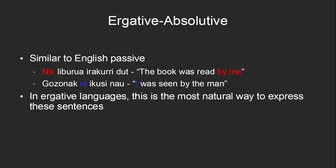Ergative-absolutive alignment is somewhat similar to the passive voice in a nominative-accusative language like English. For example, the previous two sentences could be translated in a passive-like construction. But in an ergative language, this would be the most natural way to express these ideas, unlike English where it is an unusual construction.